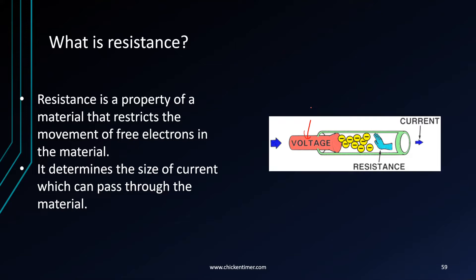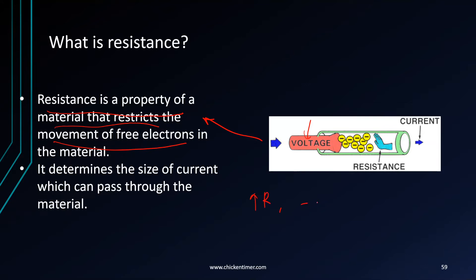In words, resistance is the property of the material that restricts the movement of free electrons. It determines the size of current which can pass through the material. So if there is high resistance, then current will be low — the amount of current that can pass through is low.